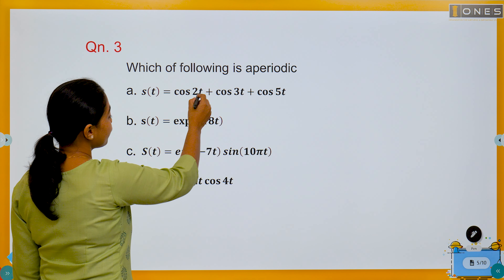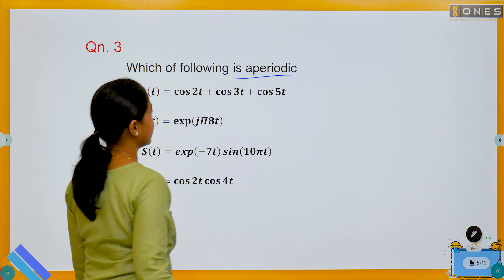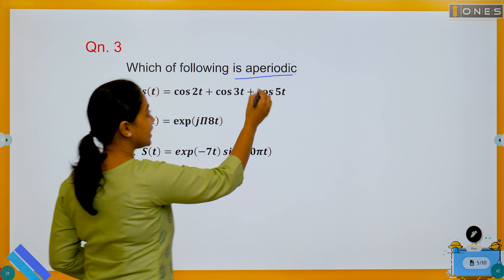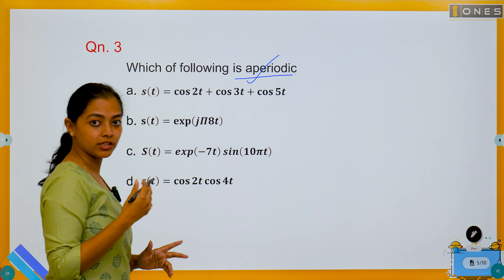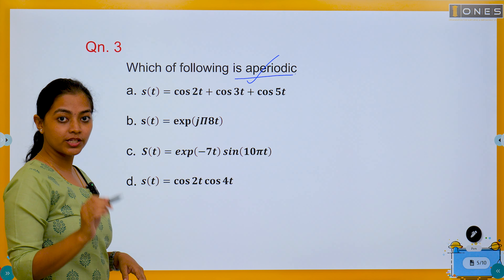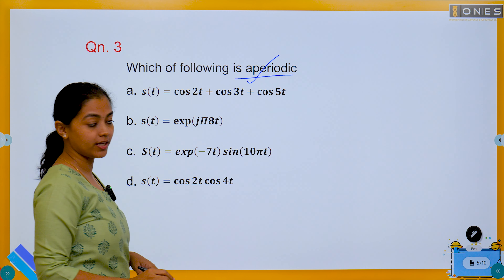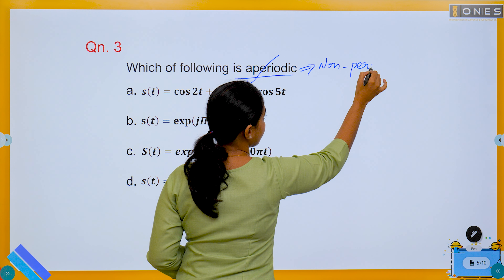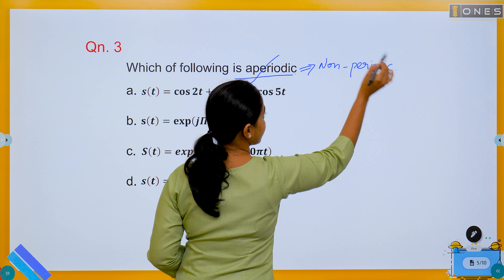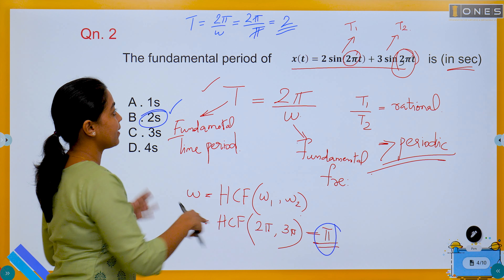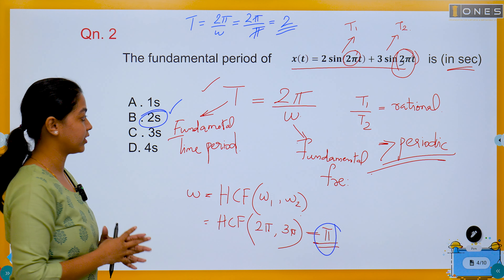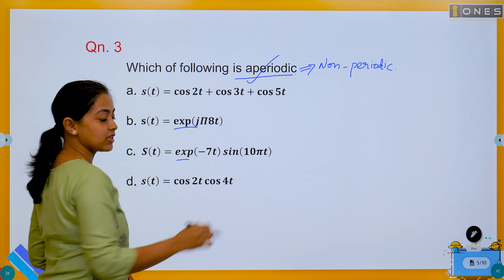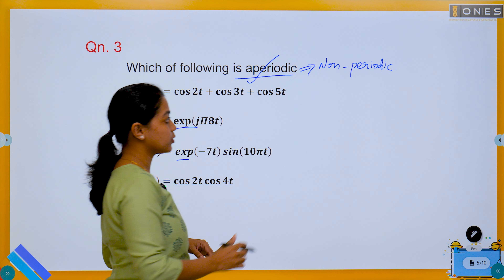Next question: which of the following is aperiodic? We have 4 options with 4 signals — which one is aperiodic (non-periodic)? We use the same method we calculated before. Let's generalize exponential signals.